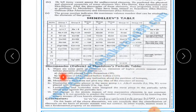Similarly, tellurium (127.5) is placed before iodine, which is incorrect. Also, the table does not give any indication about the position of isotopes.